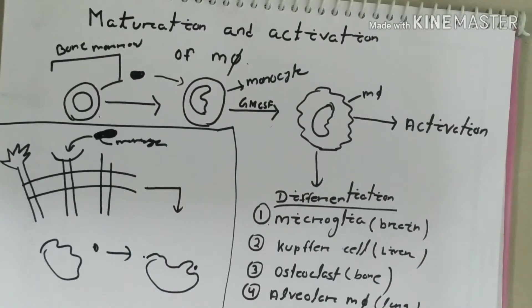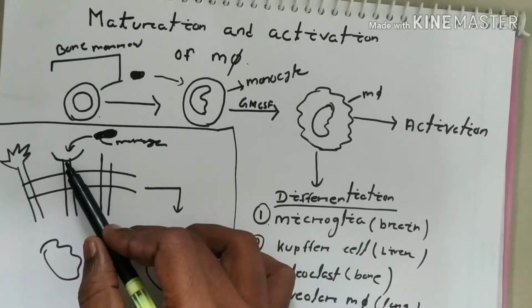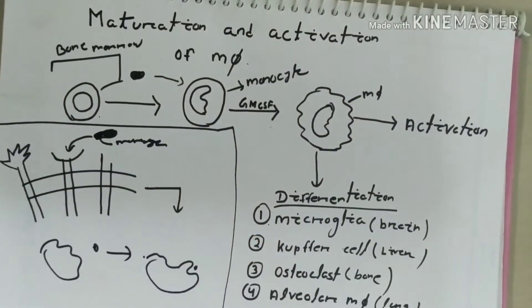How is macrophage activated? Suppose a pathogen, suppose this is a bacteria, and it has outer side mannose component of cell wall. This will be detected by the receptor present on the macrophage.